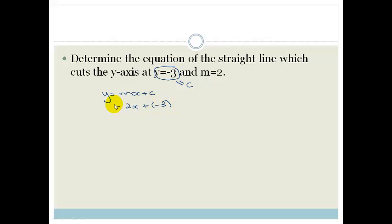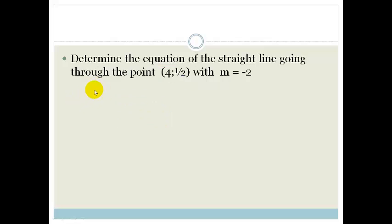Sometimes things get a little bit more complicated and they give us a point and the gradient. So now we have to apply this. We've got y equals mx plus c, they've given us the gradient which is minus 2, therefore we've got y equals minus 2x plus c.